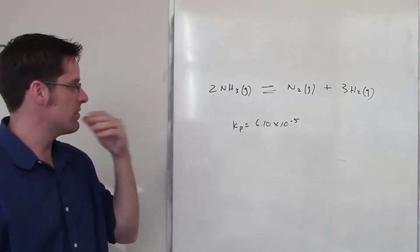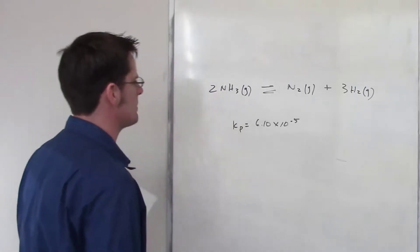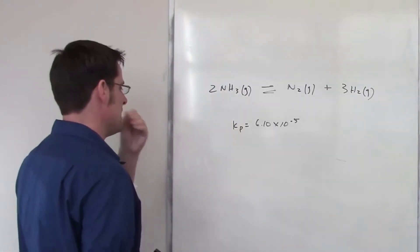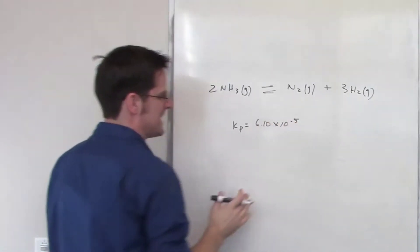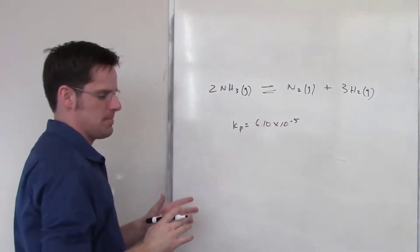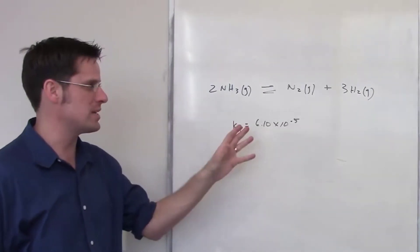This is an important question involving this very important reaction, the very one that is used in the Haber process that we talked about elsewhere. It tells me that I've got ammonia in equilibrium with N2 and H2 gases and it gives me Kp. It then asks me what would we expect to find in the system once it's reached equilibrium?